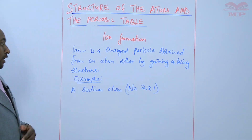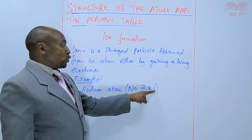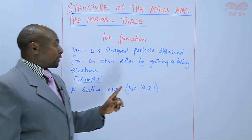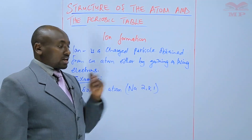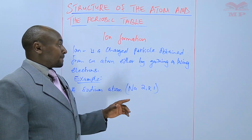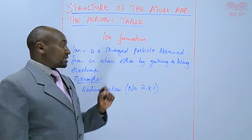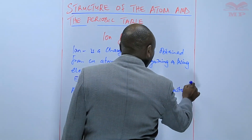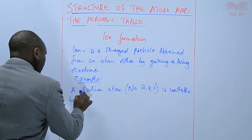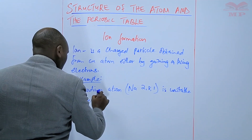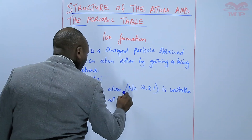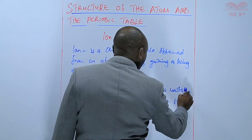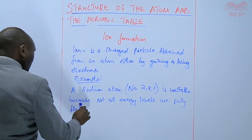So the third energy level is not fully occupied by electrons, so we can say that this is an unstable atom. In order to become stable, this atom can either lose this one electron or it can gain seven electrons so that it attains a stable electron arrangement of either 2,8 or 2,8,8. The sodium atom 2,8,1 is unstable because not all energy levels are fully filled with electrons.